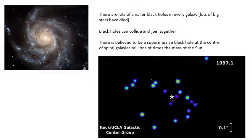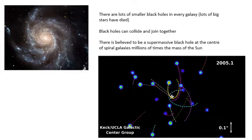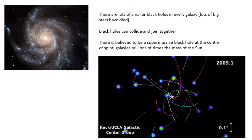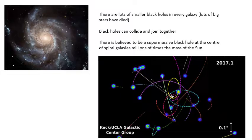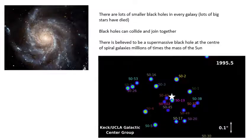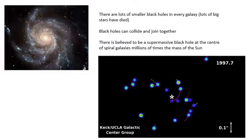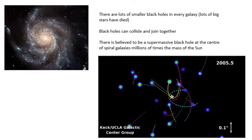A little bit more about black holes. There are lots of smaller black holes in every galaxy. Lots and lots of big stars have died, and when they died they ended up as neutron stars and black holes. So basically within our galaxy there are lots of black holes, lots and lots of them. Black holes can collide, they can join together.